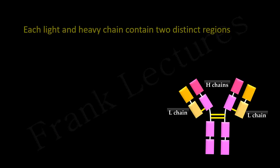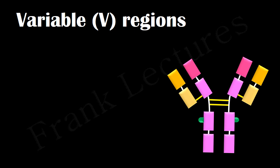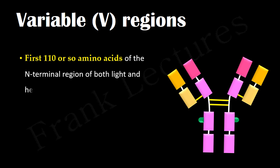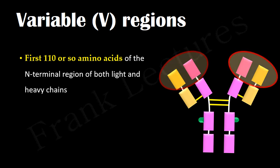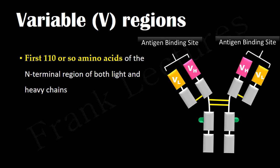Each light and heavy chain contain two distinct regions: Variable regions and constant regions. Variable region refers to the first 110 amino acids of the N-terminal region in each heavy and light chain. These regions are so called because the amino acid sequences in these regions have great variability. These regions are designated as VL in each light chain and VH in each heavy chain. It is the variable region of a light chain and a heavy chain which together form the antigen binding site. So, there are two antigen binding sites in a core antibody molecule.